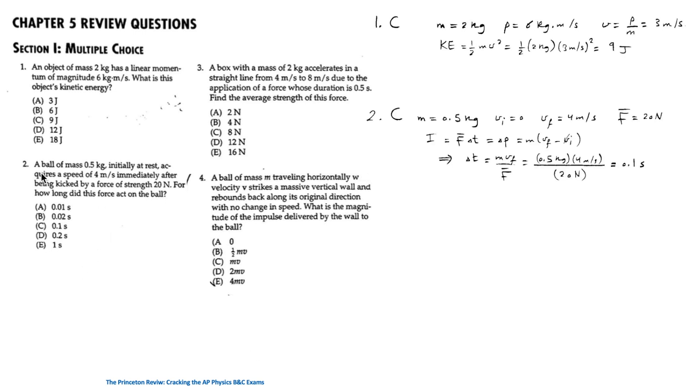For the second question, a ball of mass 0.5 kilogram initially at rest, V initial is 0, acquires the speed of 4 meter per second, V final, immediately after being kicked by a force of strength 20 newton. So for how long did this force act on the ball?